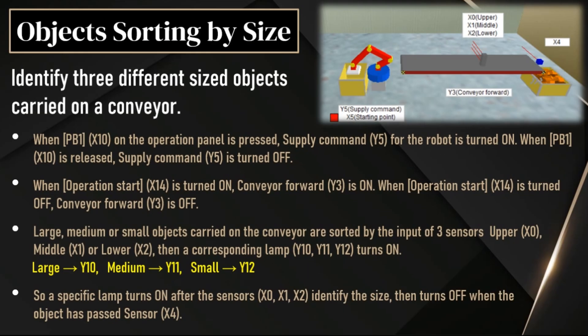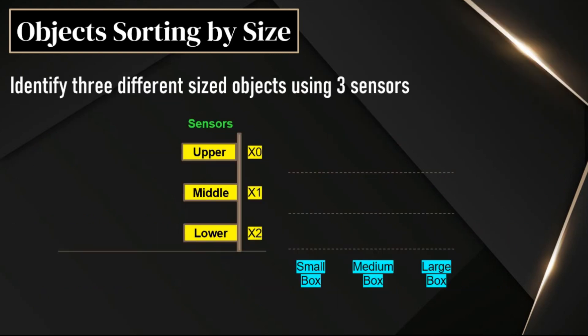Let's discuss how these sensors identify the box size. With the help of this animation, we can learn how these sensors work. There are three sensors: one lower sensor, one middle sensor, and one upper sensor — all installed vertically, one after another.